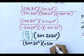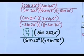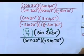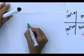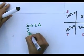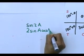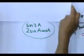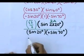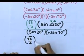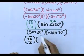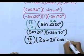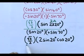sin(2a) is a double angle identity from your formula sheet: sin(2a) = 2·sin(a)·cos(a). With a = 20°, sin(40°) = 2·sin(20°)·cos(20°). So the expression becomes: (√3/2) × 2·sin(20°)·cos(20°) divided by sin(20°) × sin(70°).